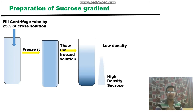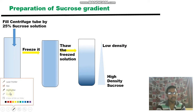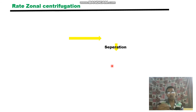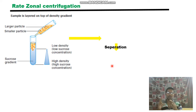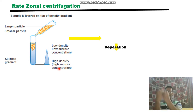The freeze-thaw process forms a density gradient with higher-density sucrose at the lower part and lower-density sucrose at the upper part of the centrifuge tube. This is the prepared sucrose gradient used for the separation.